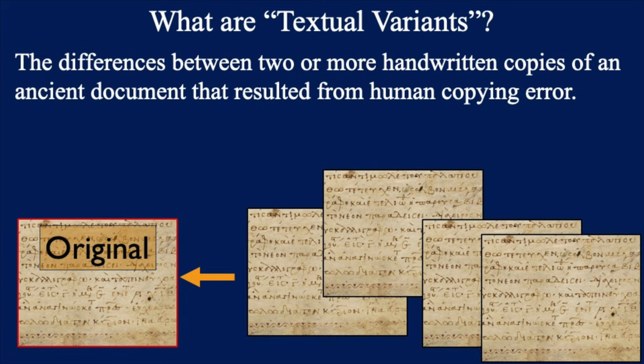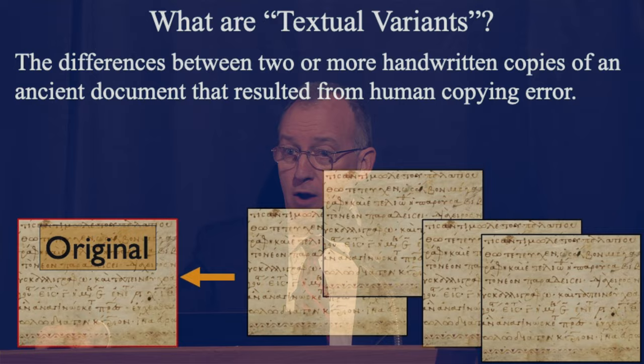Textual criticism is the academic discipline of comparing what remains of existing copies in order to weed out copying errors, in order to get back to the original that is now no longer existent. That should itself speak to the significance of textual criticism. Textual variants can be defined as the differences between two or more handwritten copies of an ancient document that resulted from human copying error.